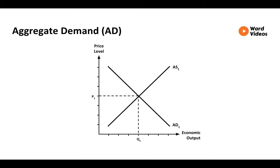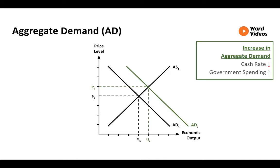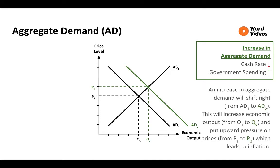Macroeconomic policy shifts the aggregate demand curve. During a downturn, the government wants to increase aggregate demand. The RBA will decrease the cash rate, which decreases interest rates, which increases disposable income. While the government also wants to increase government spending. An increase in aggregate demand will shift the curve right from AD1 to AD2.